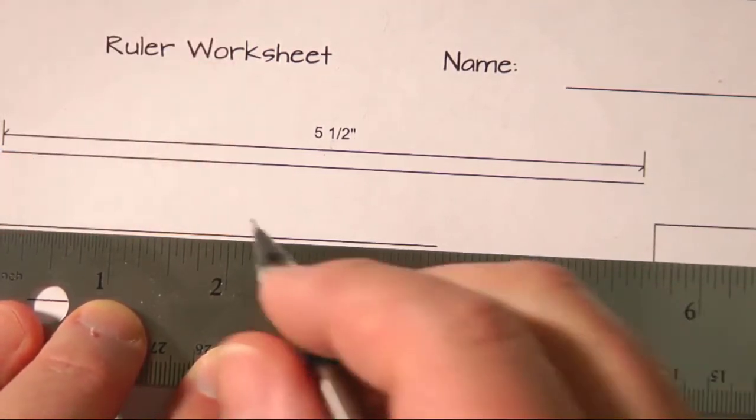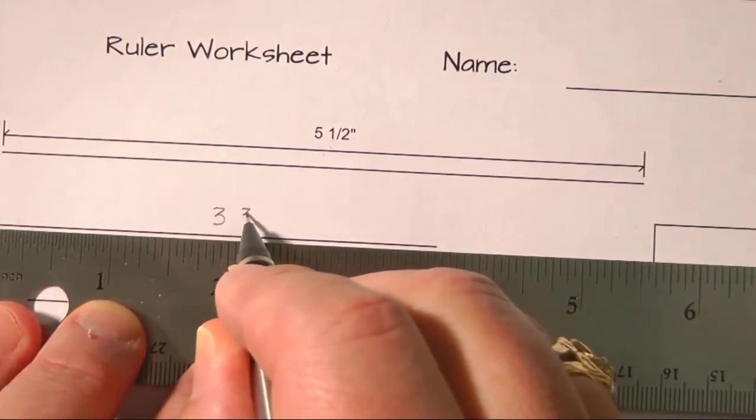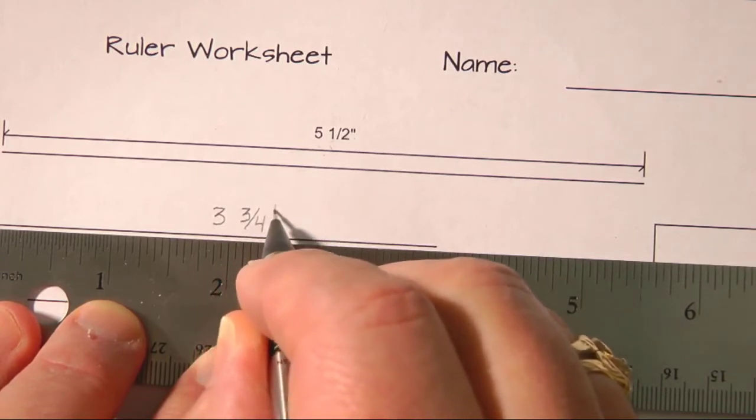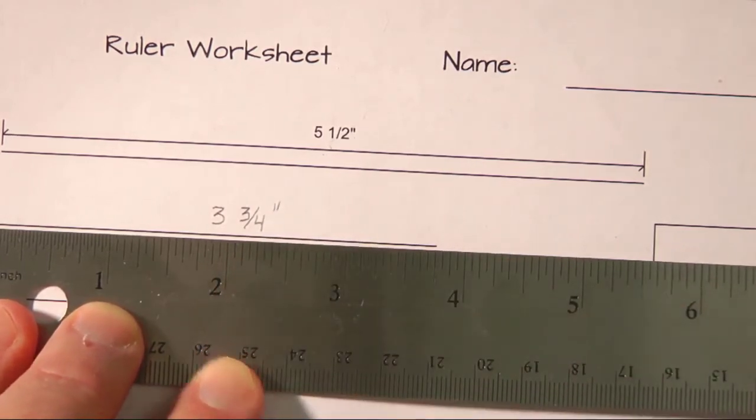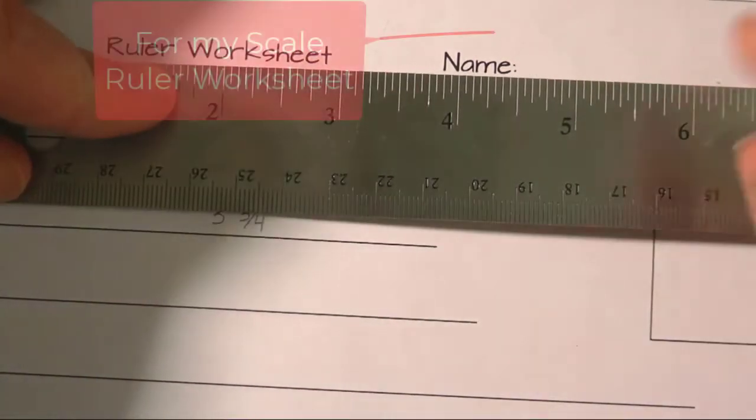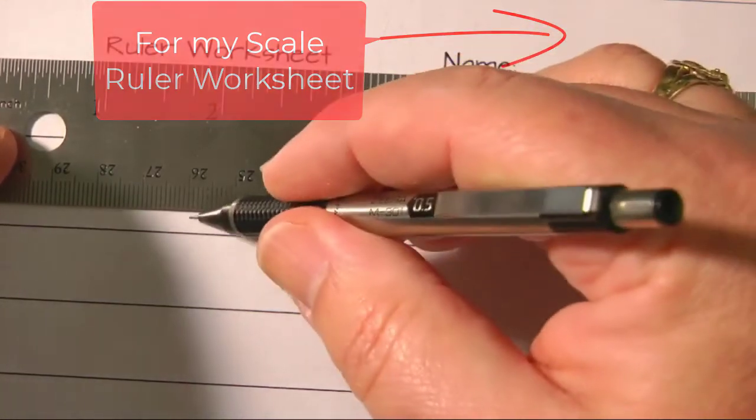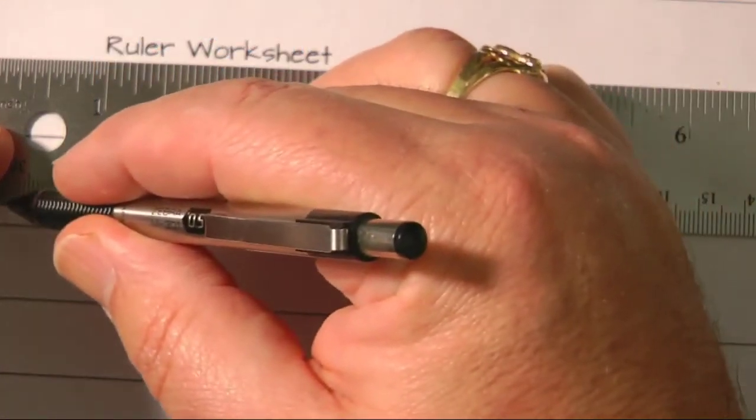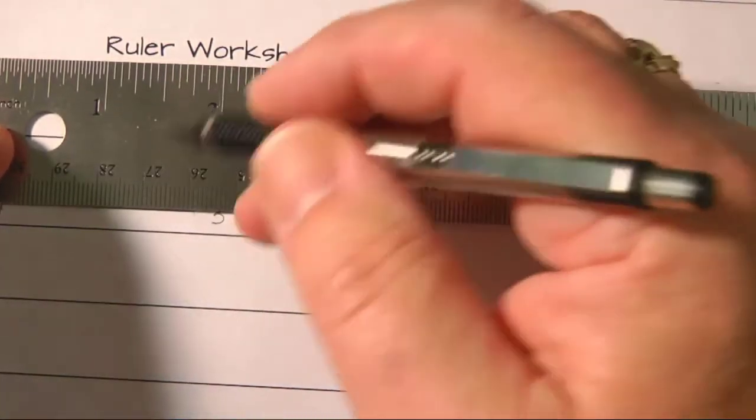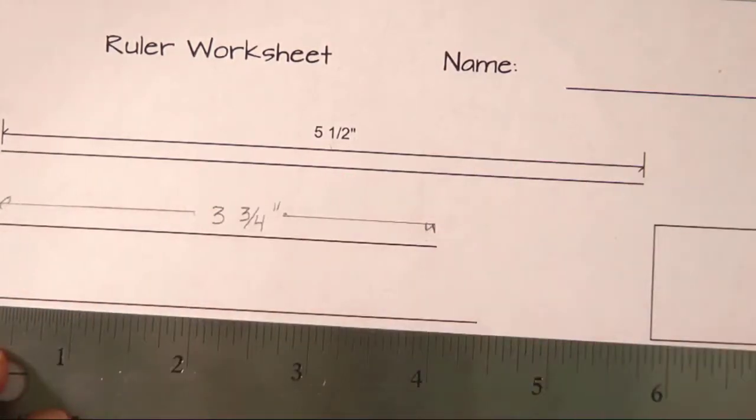So we would write that down over here, three and three quarters of an inch. And for good measure, I like drawing lines that show me how long the line is from my drafting days. So I would measure like that and like that. Now whether you're going to do this on your worksheets, it depends on how detailed you're going to get, and the purpose that you're making your worksheets for.